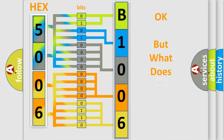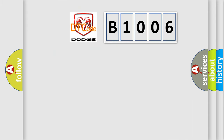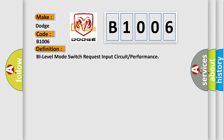The number itself does not make sense to us if we cannot assign information about what it actually expresses. So, what does the diagnostic trouble code B1006 interpret specifically for Dodge car manufacturers? The basic definition is: By level mode switch request input circuit or performance.